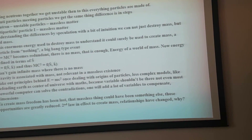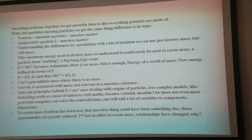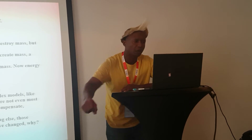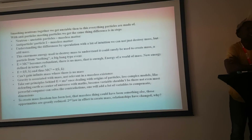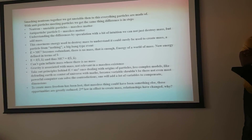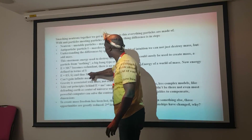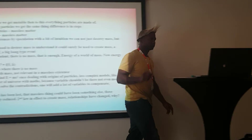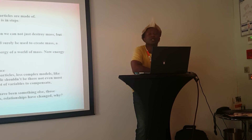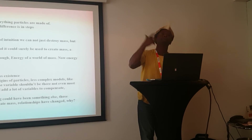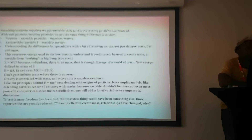This enormous energy — E equals MC² — becomes redundant before the Big Bang because there is no mass. That is enough to make it redundant regardless of who you are. E equals MC² is irrelevant before the Big Bang because there was no mass. Now, we define energy in terms of S: E equals a function of SK, and thus MC² will become a function of SK. But in a massless world, you can't gain infinite mass. So many possibilities are now possible. Gravity is associated with mass and is not relevant in a massless existence.